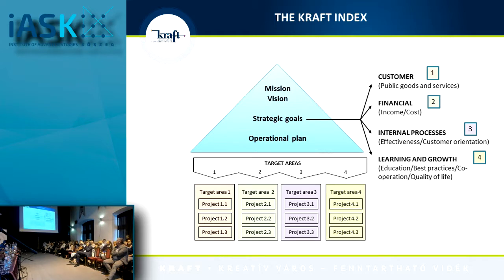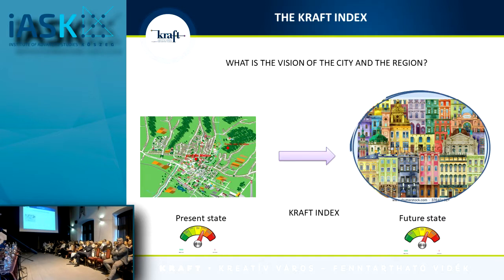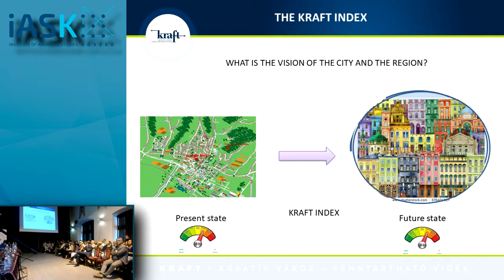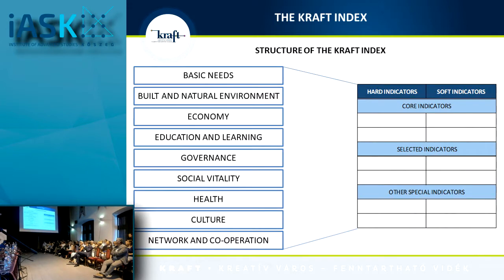If we change only the content of strategic goals from company context to regional context — for instance replacing 'products' with 'public goods' — we get a model for regional development. We first describe the present state of the region using the CRAFT index, then together with decision makers we set up a vision: a historic region emphasizing cultural heritage and tourism, a modern smart region, or a region of arts.